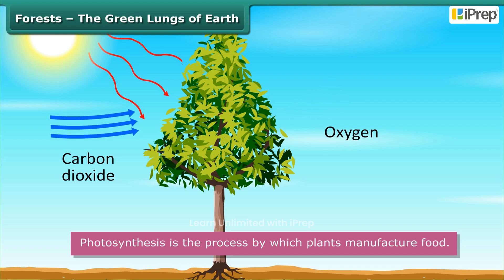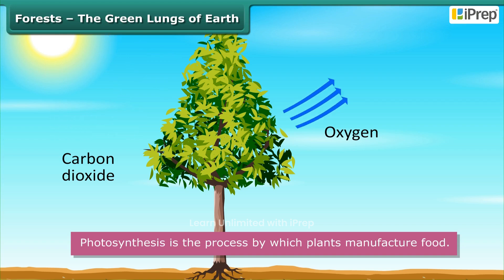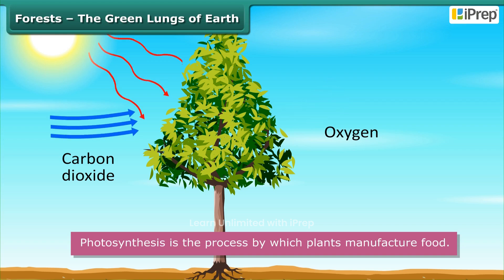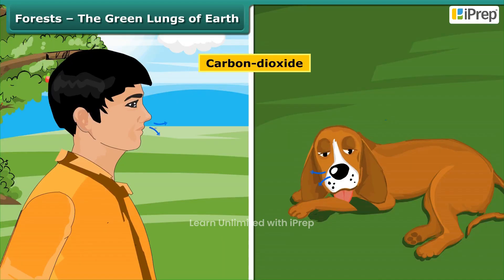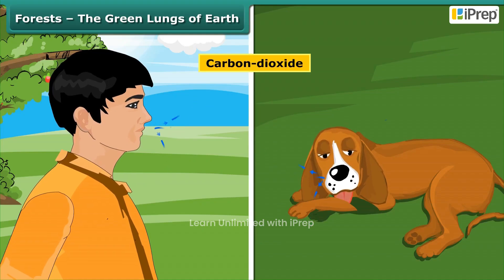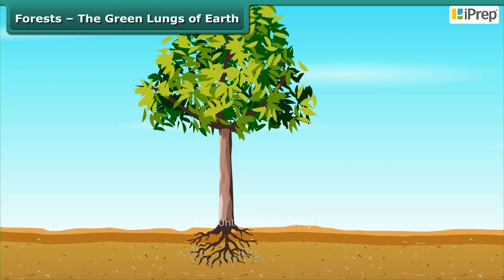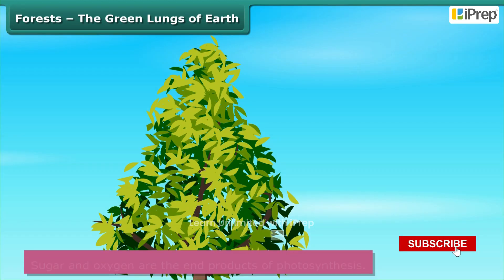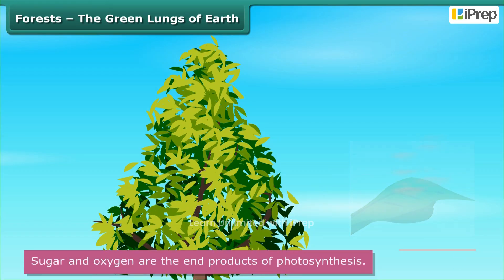Food is synthesized from carbon dioxide and water. Carbon dioxide is released by human beings and animals, while water is absorbed from the soil by plants. Sugar and oxygen are the end products of photosynthesis.